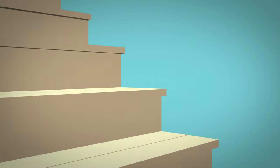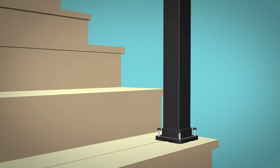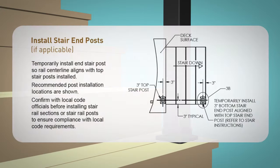Temporarily install end stair posts so rail center line aligns with top stair posts installed. Recommended post locations are shown for the most common installation requirements or applications. Be sure to check with your local code officials before installing stair rail sections or stair rail posts to ensure compliance with local code requirements.